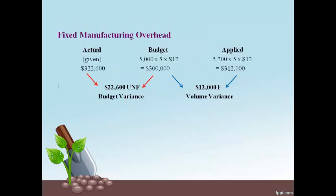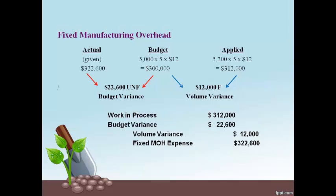Fixed manufacturing overhead costs incurred are moved to work in process with a debit at the standard cost — the amount on the far right. The credit is always recorded for the actual amount — the amount on the far left. The budget and volume variances are recorded for the difference in the actual and estimated amounts. Product costs incurred are always recorded at the estimated cost with a debit and increase to work in process. Unfavorable variances are recorded with a debit and favorable variances are recorded with a credit.